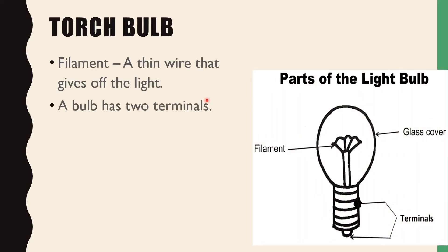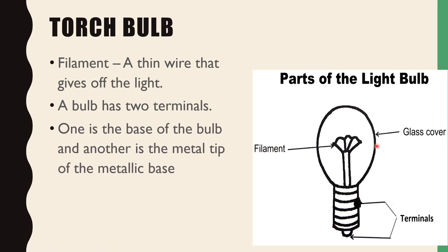Now I will tell you about the torch bulb and its parts. A torch bulb has many parts. One is the filament — this filament glows whenever electricity passes through it, giving us light. There is also a glass cover and a metal base. The metal base contains two terminals. Two wires are connected — one to each terminal. One terminal is the base of the bulb and the other is the metal tip of the metallic base. Both wires must be connected properly to their respective terminals for the bulb to glow.